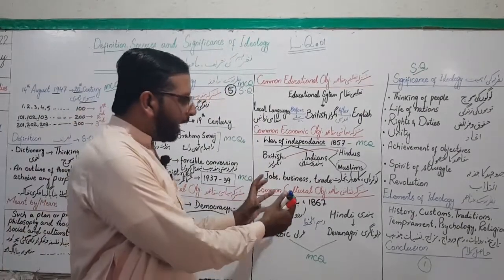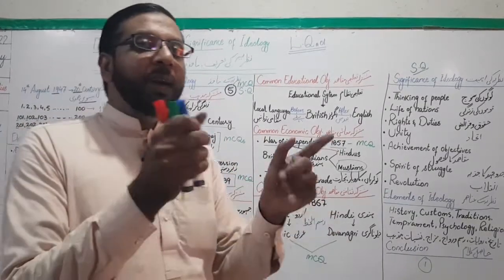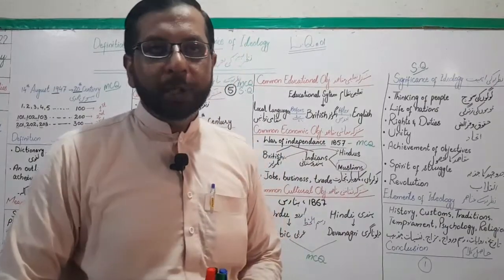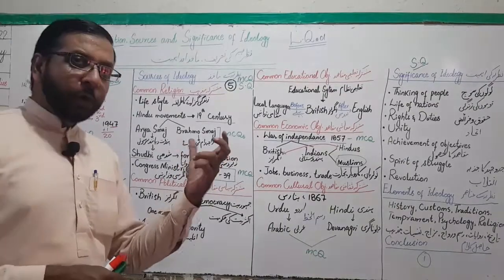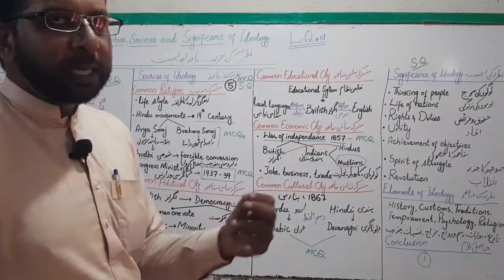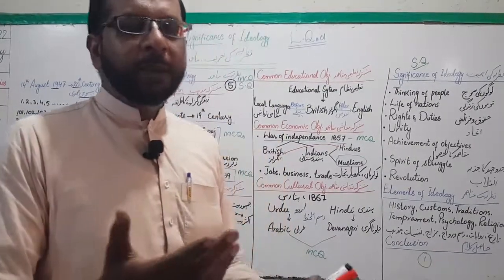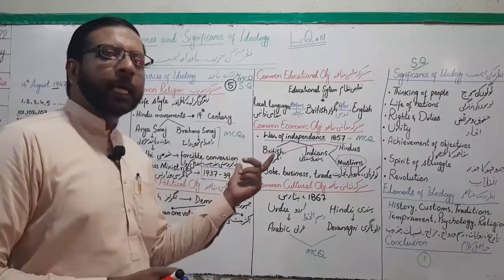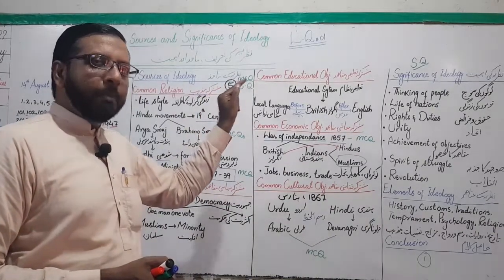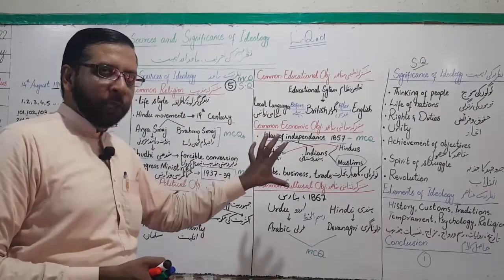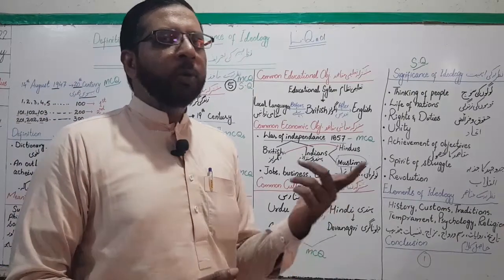Jis ki buniyad par baad mein Tehreek-e-Pakistan saari ki saari chali thi. Yahan se pata chalta hai ke cultural basis ke upar bhi ideology of Pakistan develop hui thi — yeh is ka ek aham source hai. Yahan tak hamare five sources of ideology complete ho gaye. As a general short question: 'Describe or discuss any two sources of ideology' — koi se do makhaz ki wazahat karein. Simple hai, aapne koi se do points choose karke unhe explain karna hai.